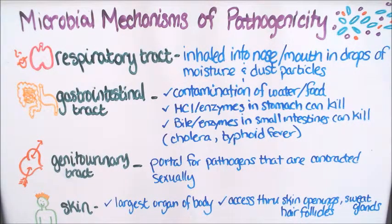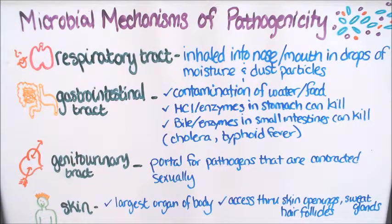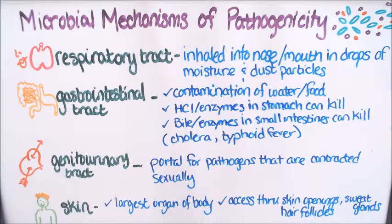A couple of illnesses associated with the gastrointestinal tract are cholera and typhoid fever. Next up is the genitourinary tract — there are pathogens that are contracted sexually. Lastly, we have the skin, which is the largest organ of the body. Pathogens can access the body through the openings of the skin, the sweat glands, and/or the hair follicles.